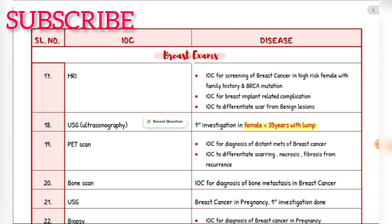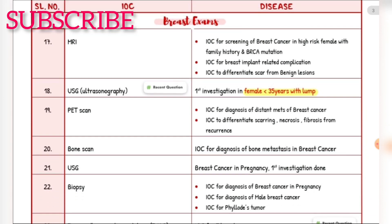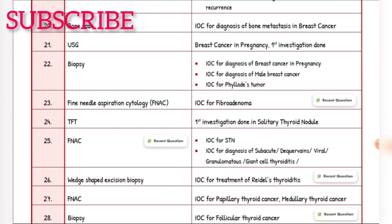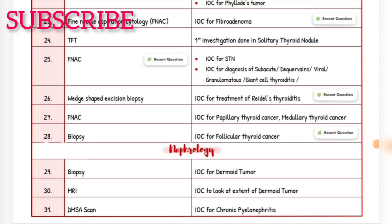Investigation of choice to differentiate scarring, necrosis, and fibrosis from recurrence — PET scan. Investigation of choice for diagnosis of bone metastasis in breast cancer — bone scan. Breast cancer in pregnancy: first investigation — ultrasound. Investigation of choice for diagnosis of breast cancer in pregnancy — biopsy. Investigation of choice for diagnosis of male breast cancer — biopsy. Investigation of choice for phyllodes tumor — biopsy.